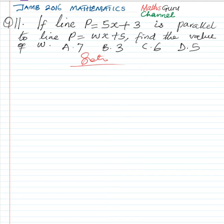If two lines are parallel, their gradients must be equal. That is to say, the gradient of P equal to 5x plus 3 must be equal to the gradient of P equal to wx plus 5 if they are to be parallel.